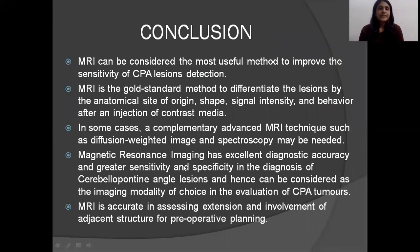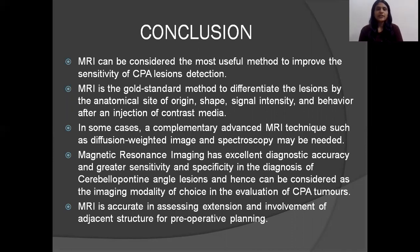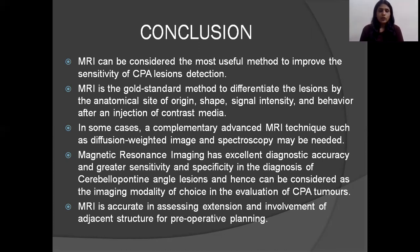MRI is a very useful method to improve sensitivity of CP angle lesion detection and is the gold standard method for differentiating lesions by their site of origin, shape, signal intensity, and behavior after contrast media injection. Complementary MRI techniques like diffusion-weighted imaging are useful — epidermoid and arachnoid cysts are differentiated only by diffusion-weighted images. MRI has excellent diagnostic accuracy, sensitivity, and specificity in CP angle lesion diagnosis, and also evaluates extent and involvement of adjacent structures for pre-operative planning. Contrast MRI is the modality of choice for CP angle tumors.